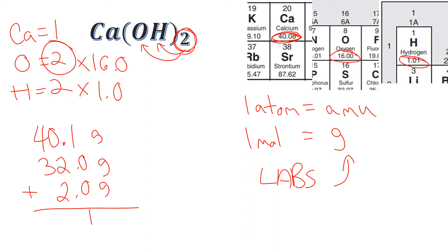And we have 40.1, we have 32, and we have 2, which gives us 74.1 grams. So for every one mole of calcium hydroxide, Ca(OH)2, it's going to weigh 74.1 grams.